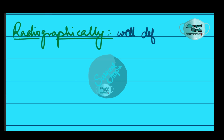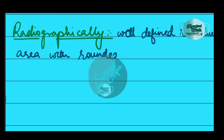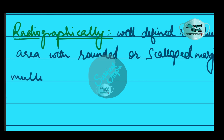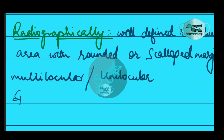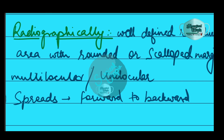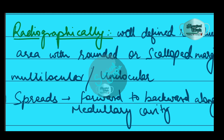The radiological findings of the odontogenic keratocyst show well-defined radiolucent areas with rounded or scalloped margins, which are well demarcated. These areas can be multilocular or unilocular. The growth pattern is characteristic: there is spread of the lesion in the forward and backward direction along the medullary cavity, with little or no expansion of the bone.